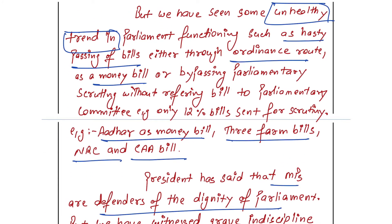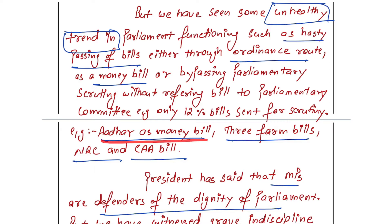For example, only 12% of bills are sent for scrutiny. Give examples of how bills are being bypassed — Aadhaar was passed as a money bill, three farm bills were passed without scrutiny, and NRC/CAA were passed without proper deliberation and discussion in parliament. You need to be very selective with your words while writing this — you cannot write in a very critical manner. Simply present your argument and give one example to substantiate your statement.